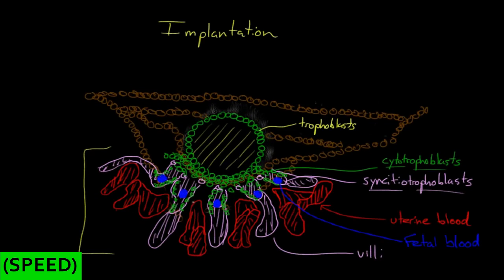And as it gets larger, more and more nutrients can be transferred and waste can be transferred. And the structure gets bigger and bigger and eventually lines almost the entire inside of the uterine cavity. And this structure is known as the placenta.